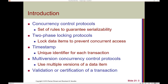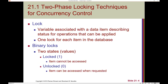In its most basic form, concurrency control uses what's called a lock — a variable associated with a data item that describes the status for operations that can be applied. Think about when you're on an airplane and different people are trying to use the restroom. There's a signifier on the outside of the door that indicates whether the restroom is available or occupied. This serves as a lock, and similarly we have locks for different data items in the database.